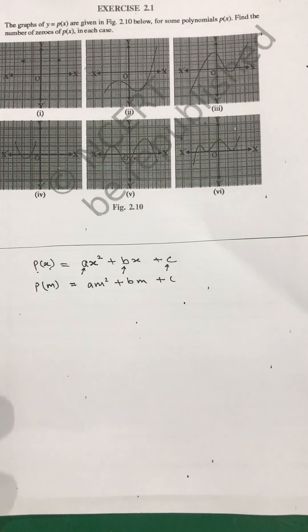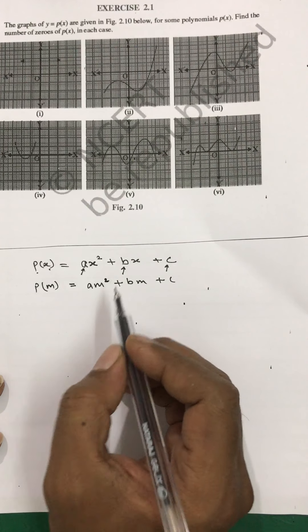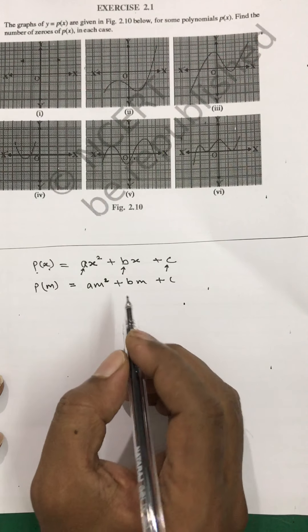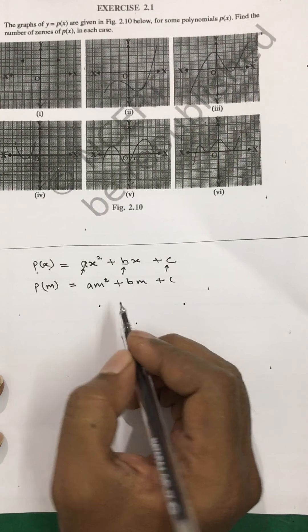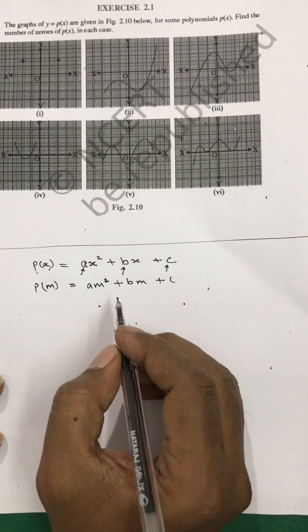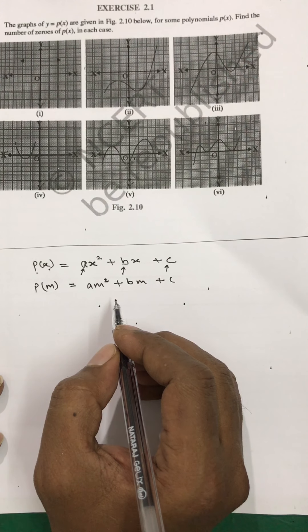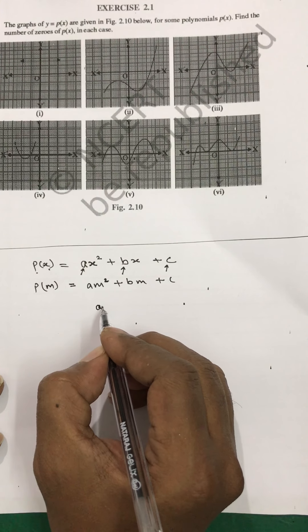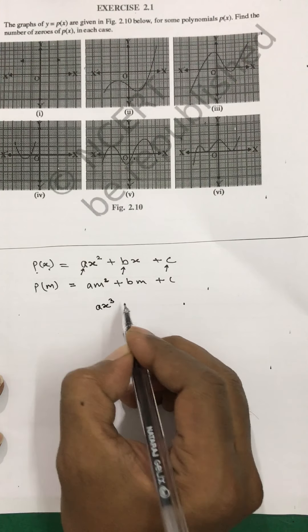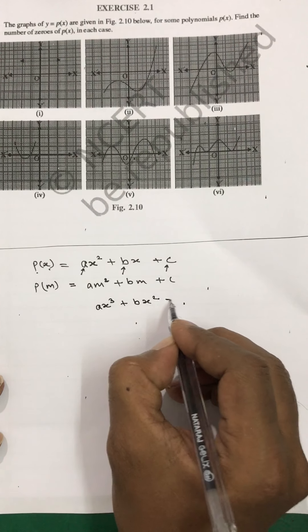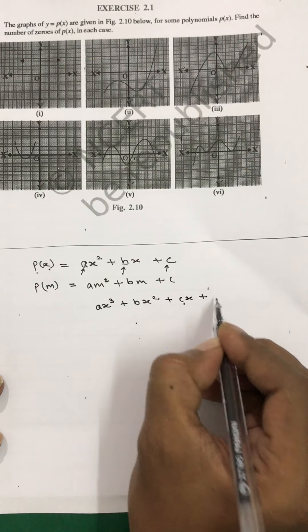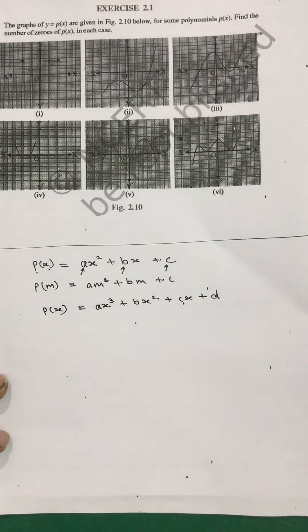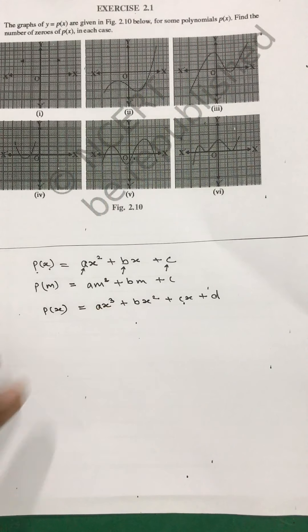If it is a quadratic polynomial, it will have highest power 2. A binomial will have only two terms. For a cubic polynomial, you will have ax cubed plus bx squared plus cx plus d, and this will again be in the form of x. This is a cubic polynomial because it has the highest power 3.